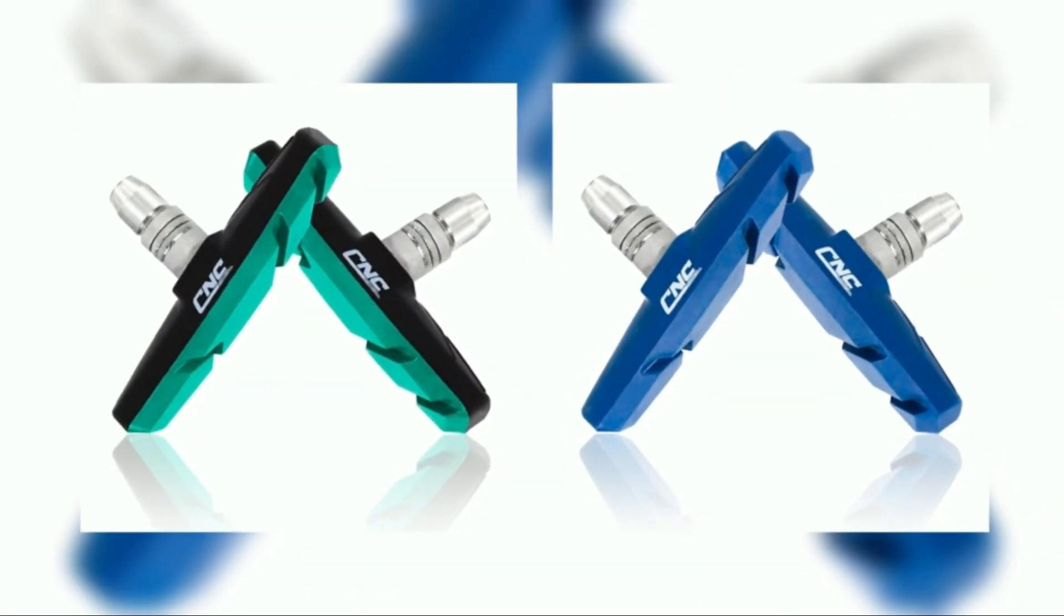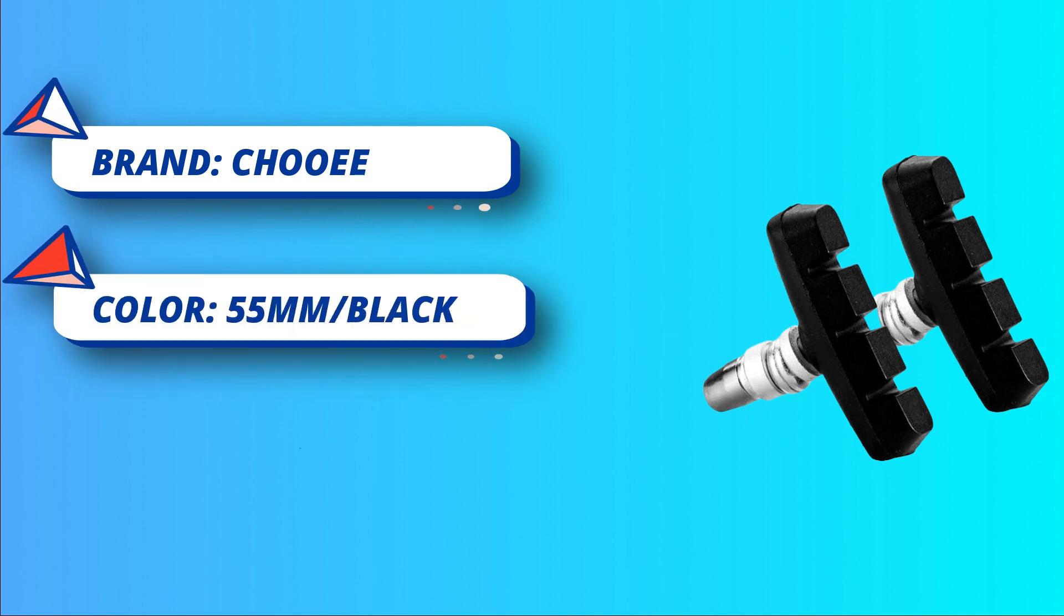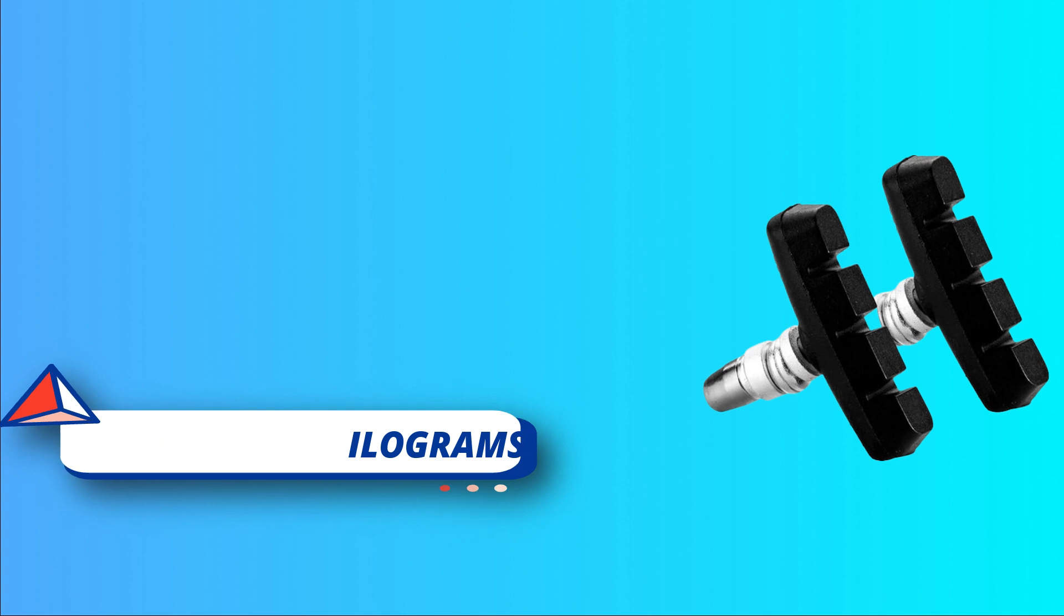Universal replacement for V-brake pads of mountain bike, road bicycle, MTB, BMX, etc. Including two sets of front and rear 55mm brake pads with hex nuts and shims and one hex wrench for installation.